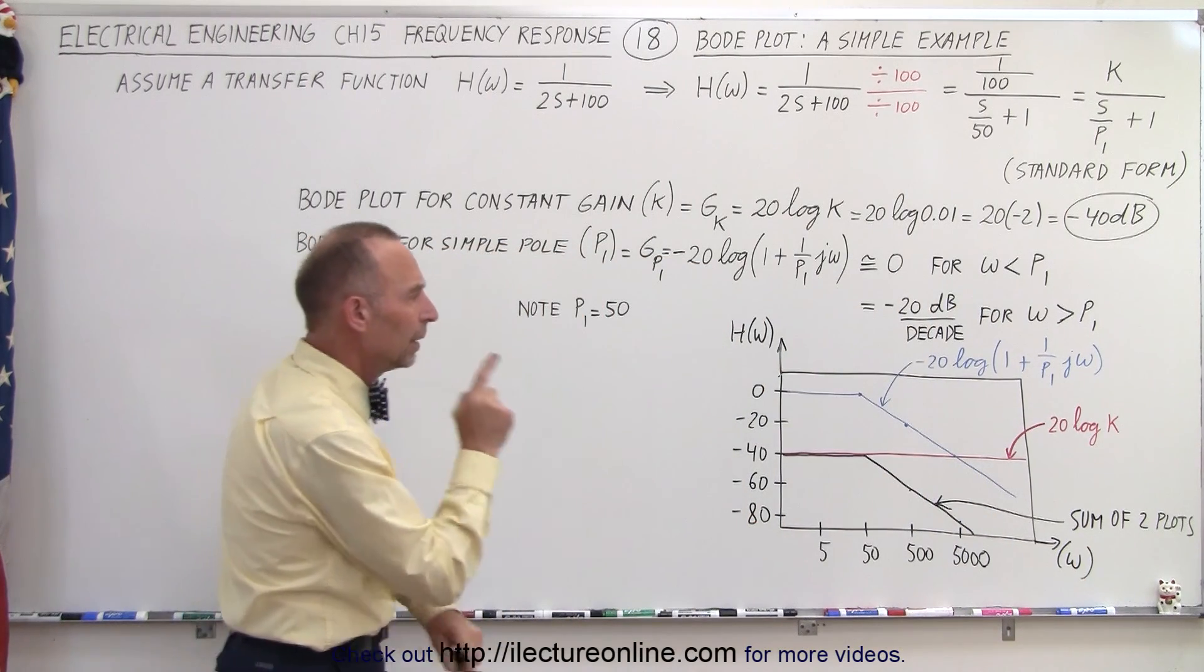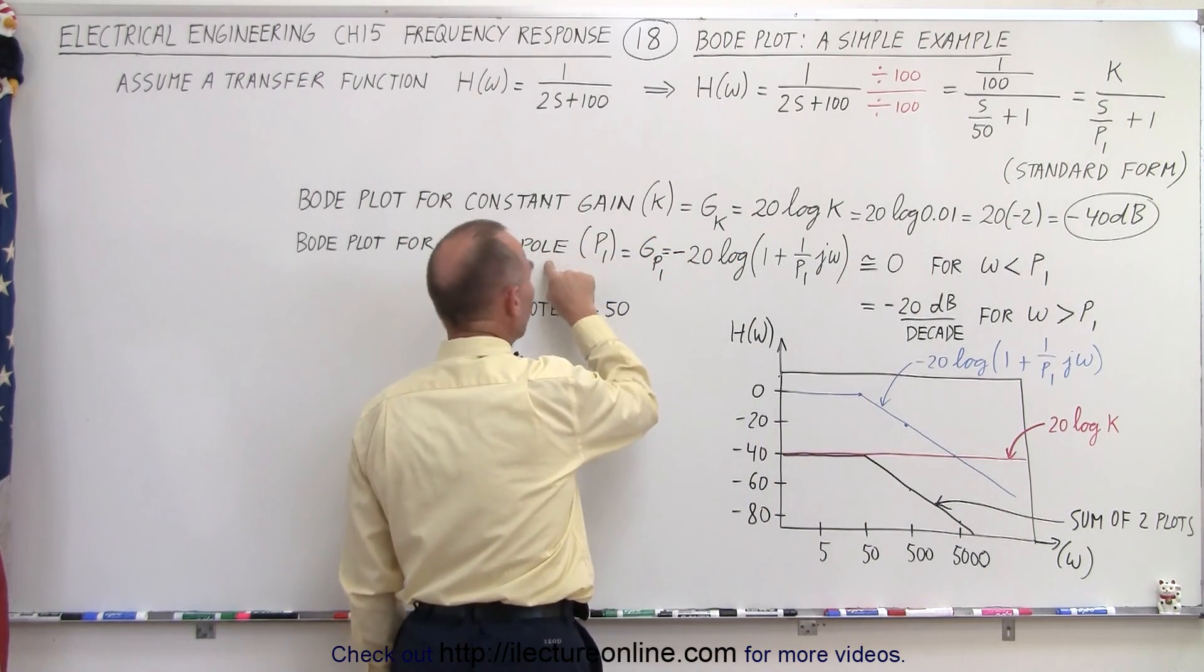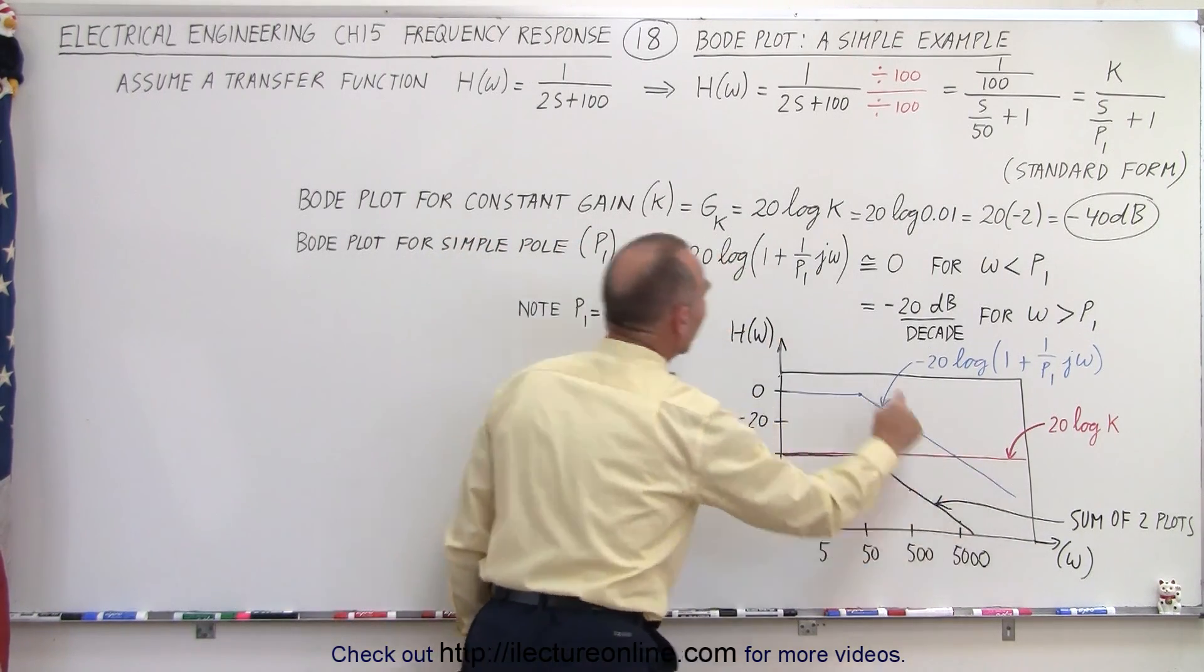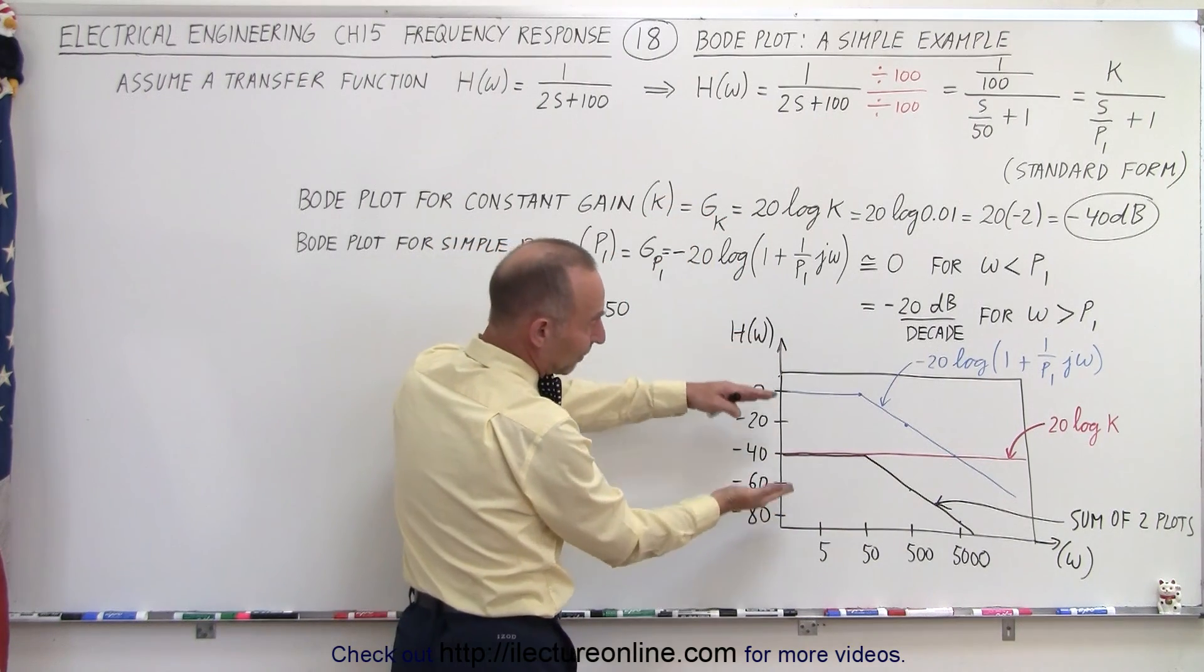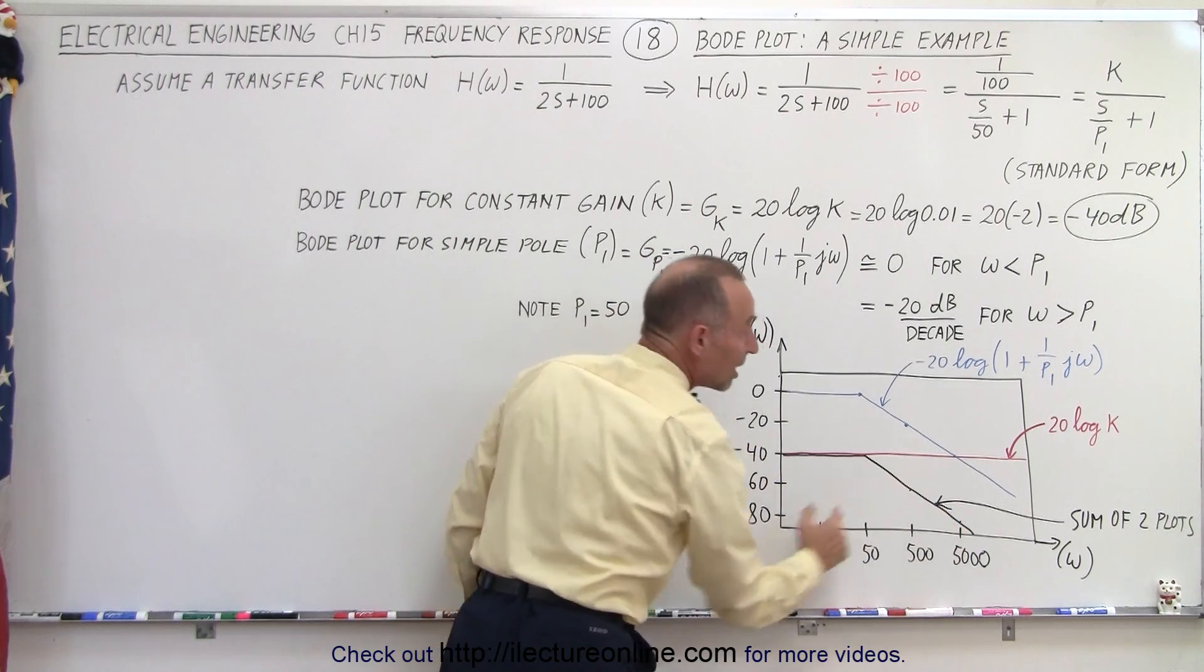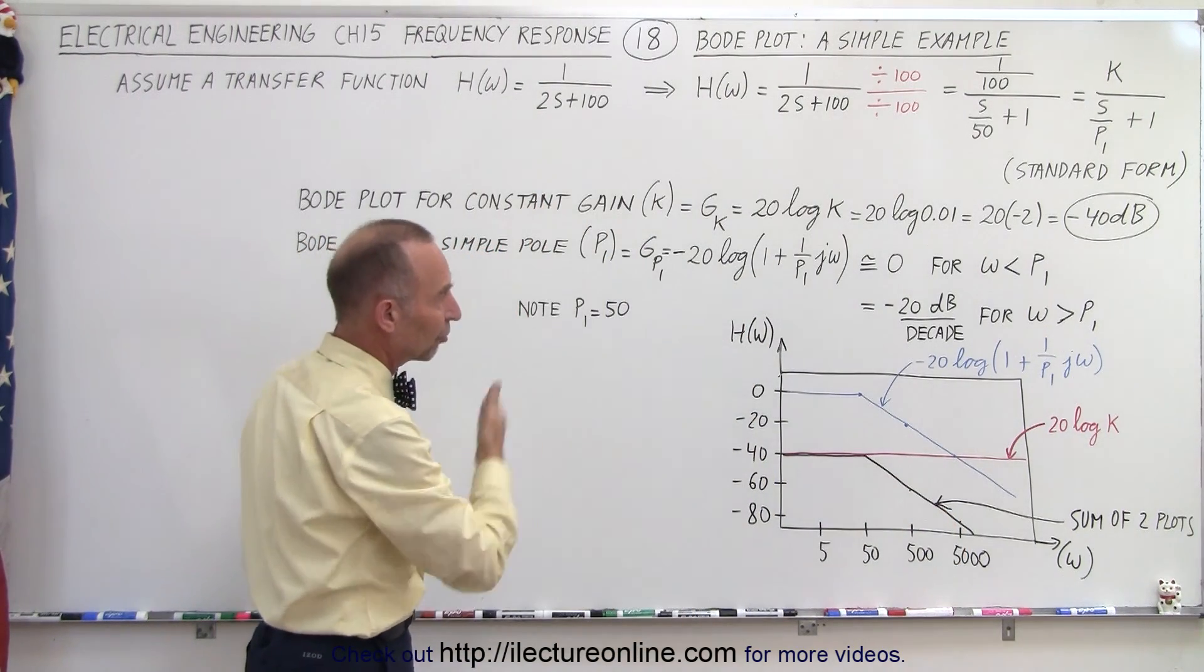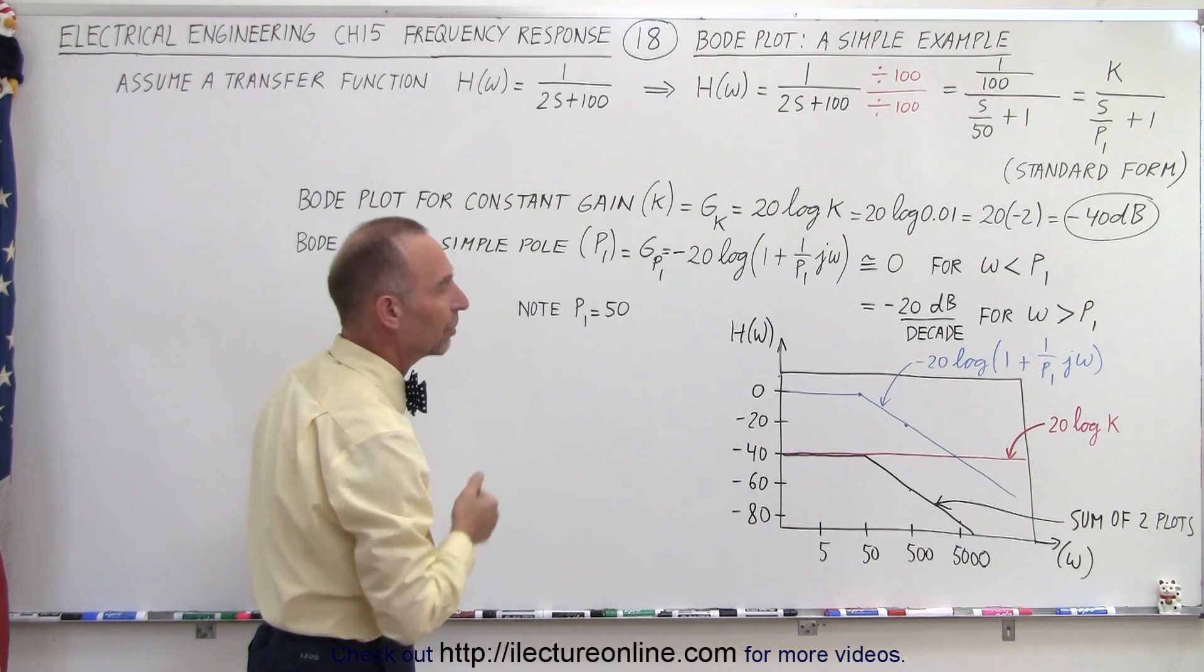Now the blue line is the Bode plot for the simple pole. The red line is the Bode plot for the constant. If we now graphically add the two together we get the black line right here and this is the Bode plot of the complete transfer function that includes the simple pole and the constant gain.